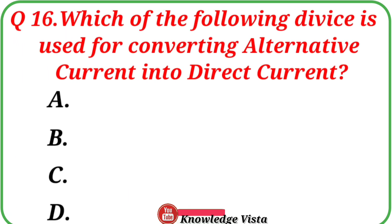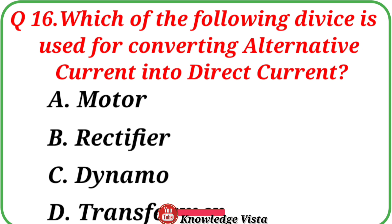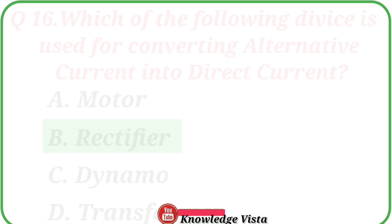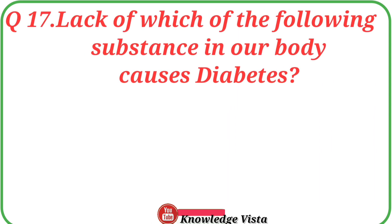Question number sixteen: Which of the following devices is used for converting alternating current into direct current? Option A: Motor, B: Rectifier, C: Dynamo, D: Transformer. Correct answer is option B: Rectifier.